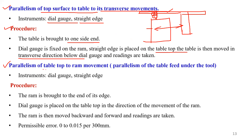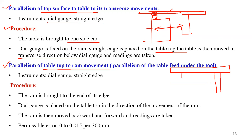Another test is parallelism of the table top surface to RAM movement. In this case, the procedure is reversed: the dial indicator is mounted on the table and its feeler is made to contact the lower surface of the RAM. The RAM is then moved towards or away from the column. The maximum permissible error is 0 to 0.015 mm for 300 mm length of travel of the RAM.